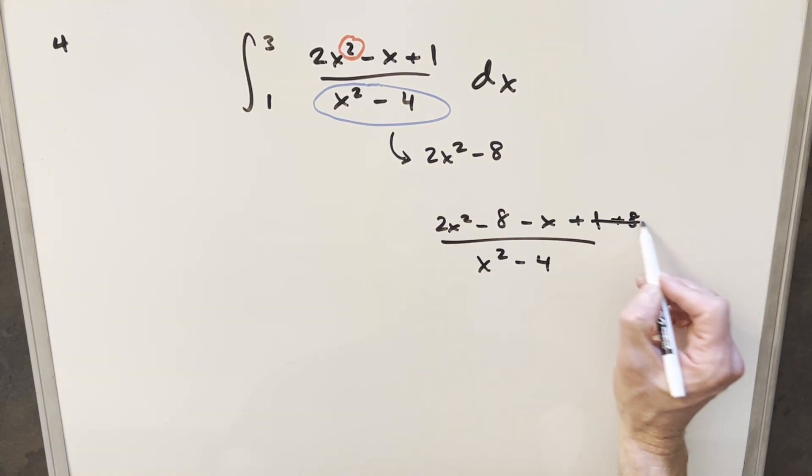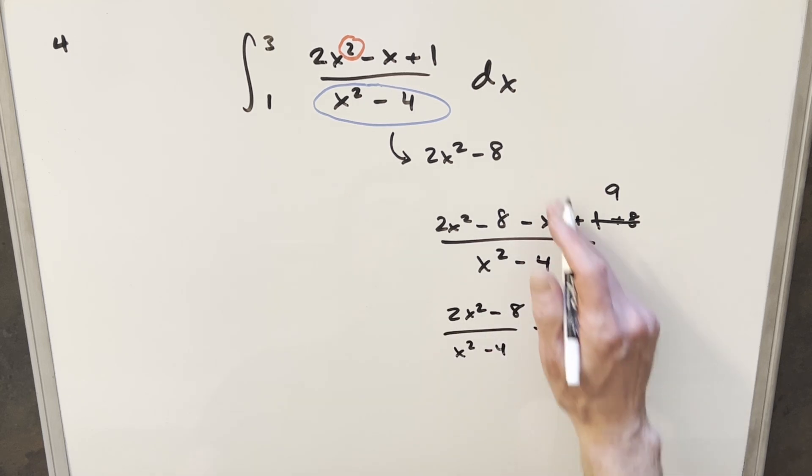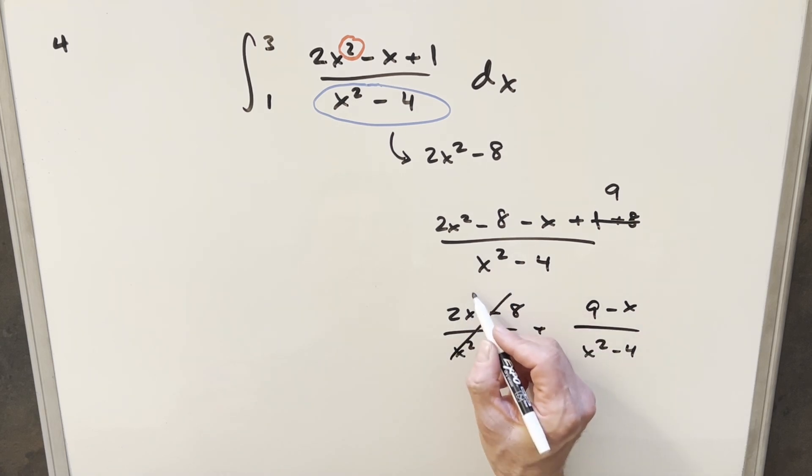But then here I can put together eight and one. We'll just have a nine here. And so what I can do then is I can split this into two fractions. One of them will be two x squared minus eight over x squared minus four. And then everything else I'll split up. I'll write this as nine minus x over here over x squared minus four. But then again, this right here, this is just going to be two.